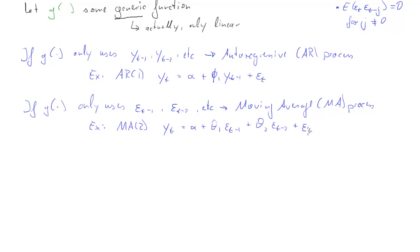So you can see epsilon t minus 1, epsilon t minus 2 appearing here, and the epsilon t, all linearly entering our process for yt.